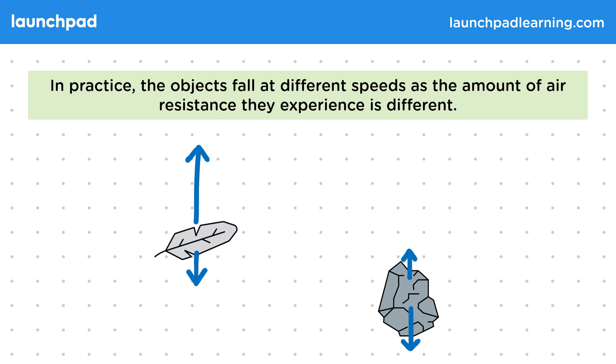It's the differences in how the objects experience both these forces, not just the weight, which causes them to accelerate differently. In particular, the fact that the feather experiences much more air resistance than the rock.